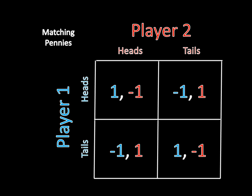This leads to a very simple game matrix. Matching pennies is the classic example of a zero-sum game. In a zero-sum game, whenever you win something, your opponent loses exactly that much, and vice versa. So here, whenever I win $1, my opponent loses $1. And whenever my opponent wins $1, I lose $1.